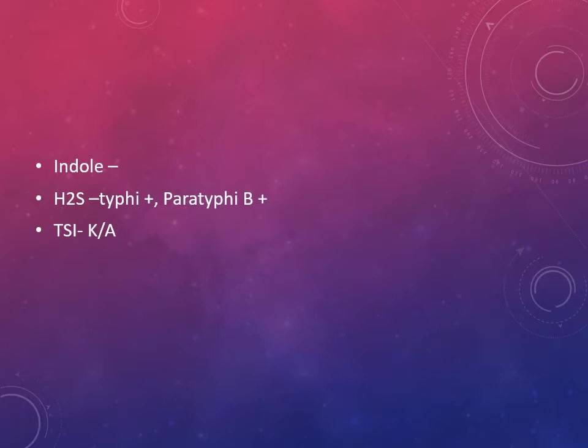Once you have identified it as Salmonella, you also need to do speciation - two species are there: Salmonella enterica and Salmonella bongori. With biochemicals you determine which subspecies and serotype it is. Other tests include indole - most times indole negative - and H2S production. Salmonella Typhi gives H2S positive; Paratyphi A is negative. Typhoid is caused by only three serotypes: Salmonella Typhi, Paratyphi A, and Paratyphi B.